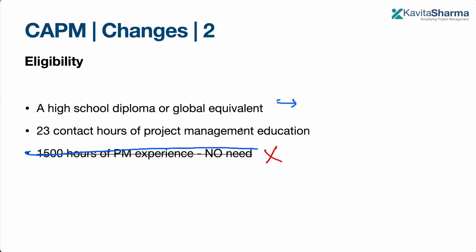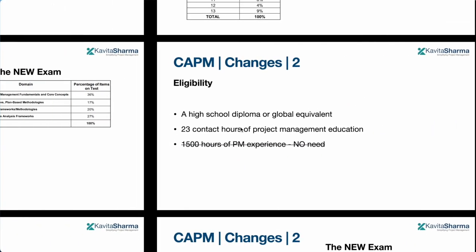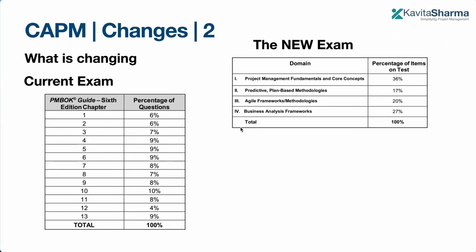The eligibility required to appear for the CAPM exam is a high school diploma and 23 contact hours, which are 23 PDUs — Professional Development Unit certificates. These come from any ATP who teaches you the CAPM syllabus as per the ECO, also known as an ETP with PMI.